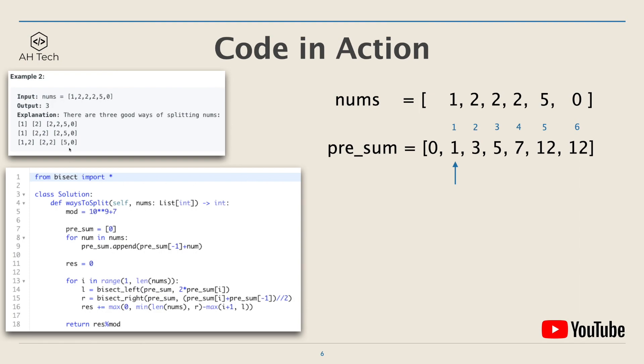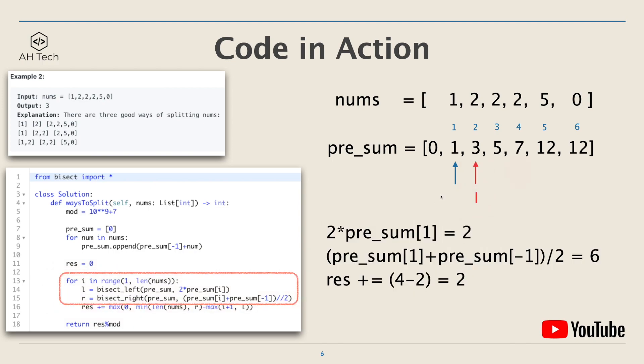Now let's see the code in action. We'll be looking at example two. Here is the prefix sum array and we will start at index one. First step is to find the left and right boundary. At index one, two times pre_sum[1] is two, and pre_sum[1] plus pre_sum[-1] divided by two is six. So the left and right boundary is two and four. That means any j between two to four will satisfy the key requirements. So the number of good ways we can split the nums array is four minus two, which is two.